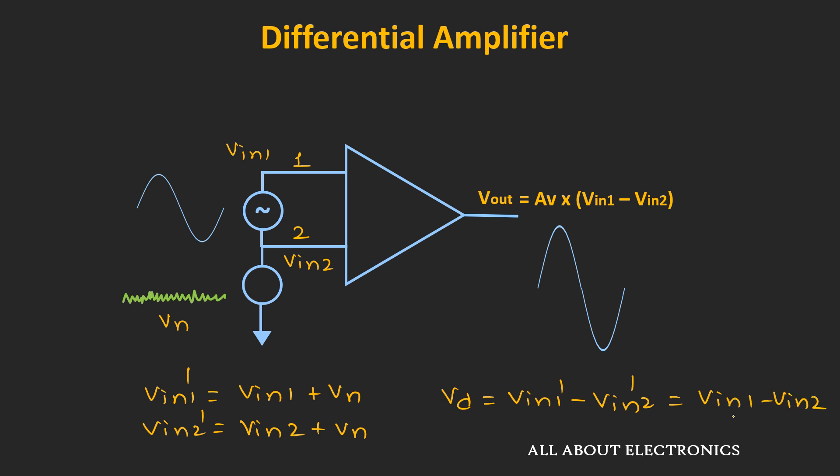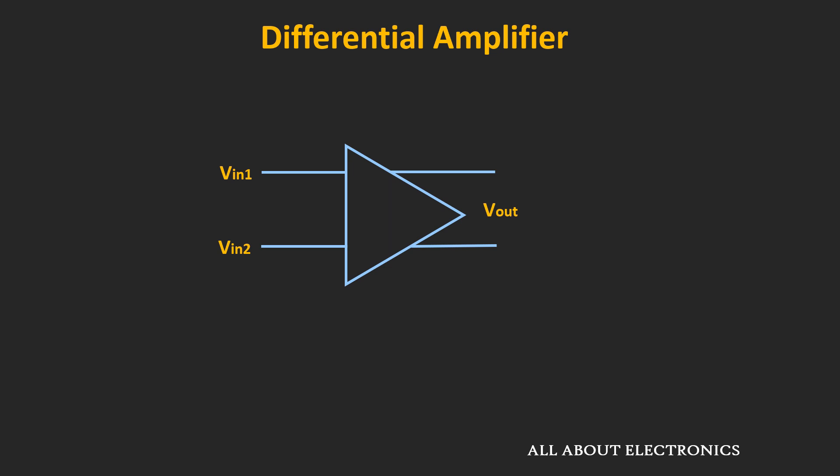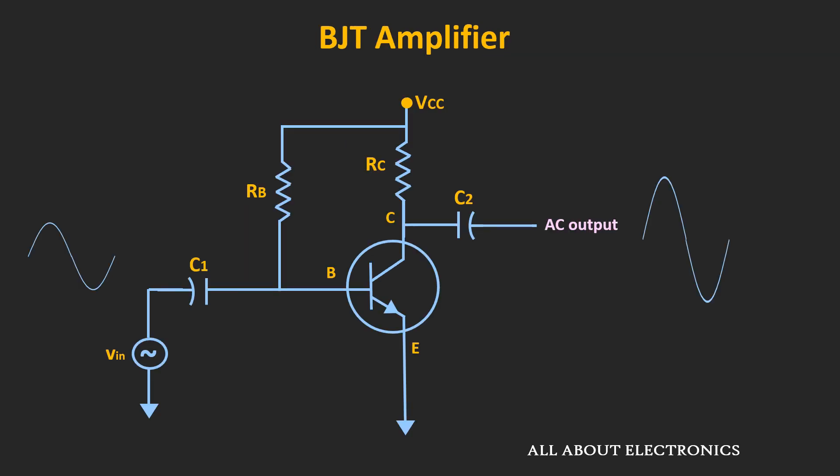That means at the output, the noise won't appear. That is the advantage of this differential amplifier — it amplifies the differential input, or the difference between the two input terminals, and eliminates the common mode noise or signal which is common to both input terminals. Moreover, by taking the output in the differential configuration, it is possible to eliminate supply hum or any noise common to the amplifier circuit. When differential amplifier stages are cascaded together, it also eliminates the need for coupling capacitors required in single-ended amplifiers.